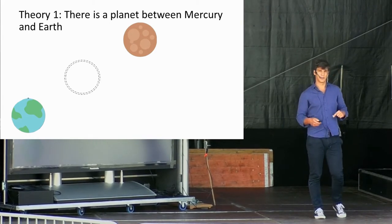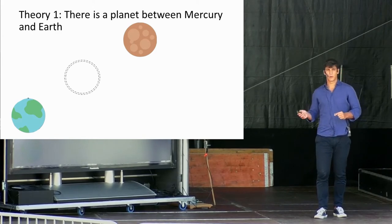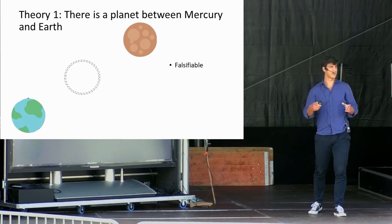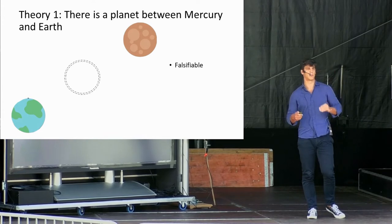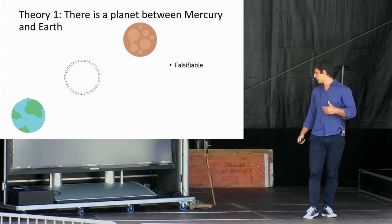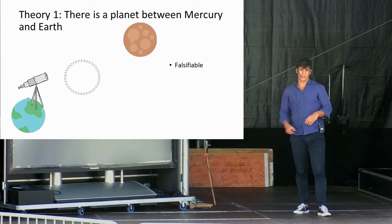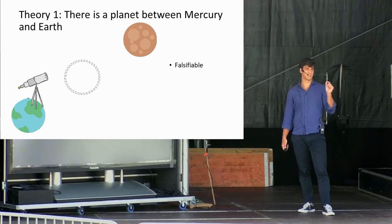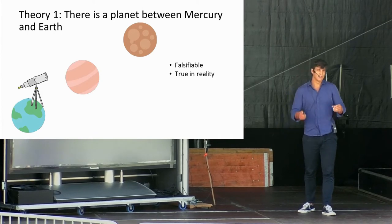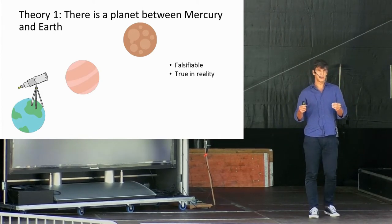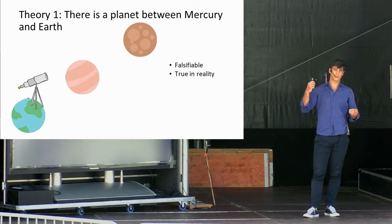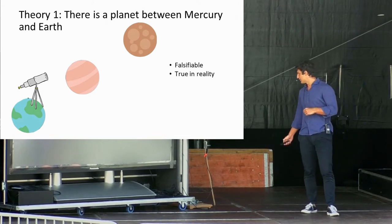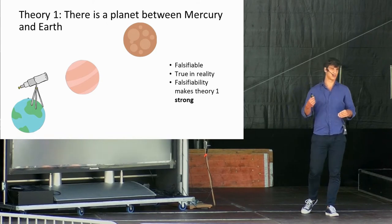In order to make this principle easier to understand, let me give an example. Let's pretend to have a theory, and let's call it theory number one. Theory number one states that there is a planet between Mercury and Earth. This theory is falsifiable. Indeed, we can think of experiments that might prove whether there is actually a planet between Mercury and Earth. For example, we might think of having a telescope that looks what is before Mercury. Of course, what we know nowadays is that there is actually a planet there, and it's called Venus. This makes the theory real in practice, but also falsifiable, since we were able to think of an experiment that might have possibly proven our theory wrong.